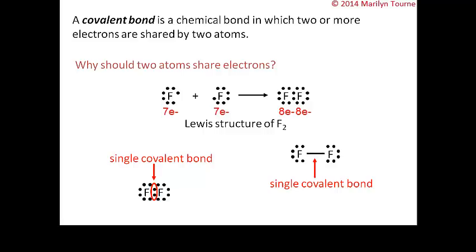This discussion of covalent bonding applies only to the representative elements — the s block and the p block — because for these elements the number of valence electrons equals the group number.